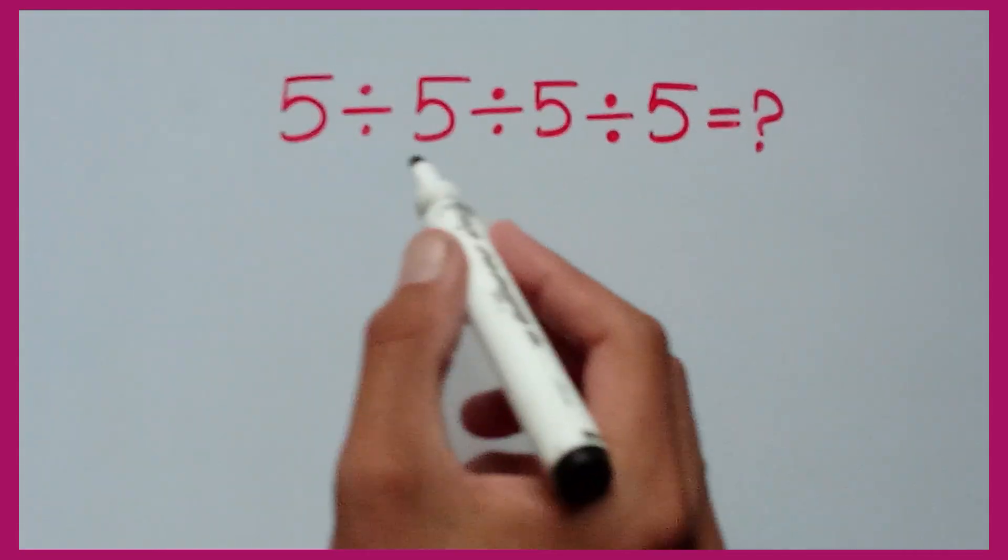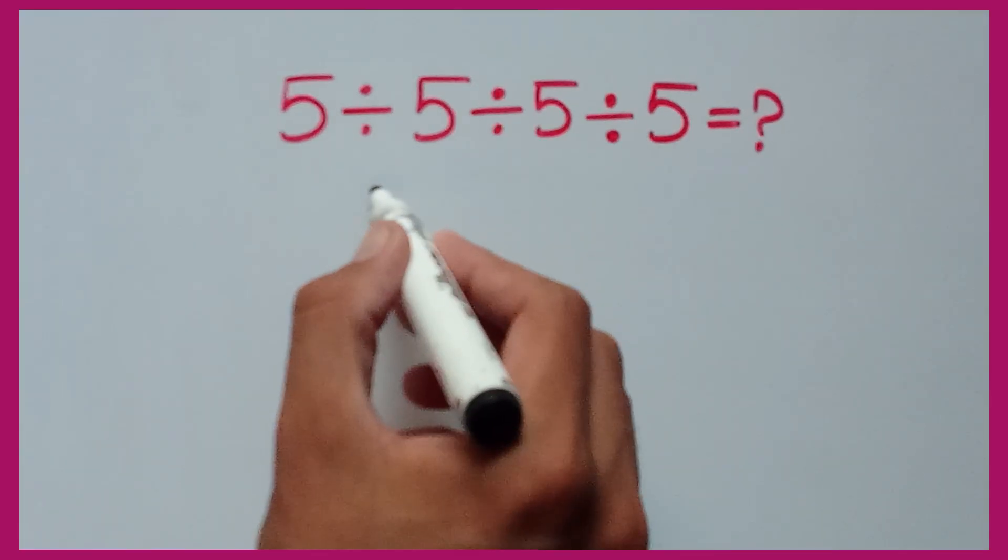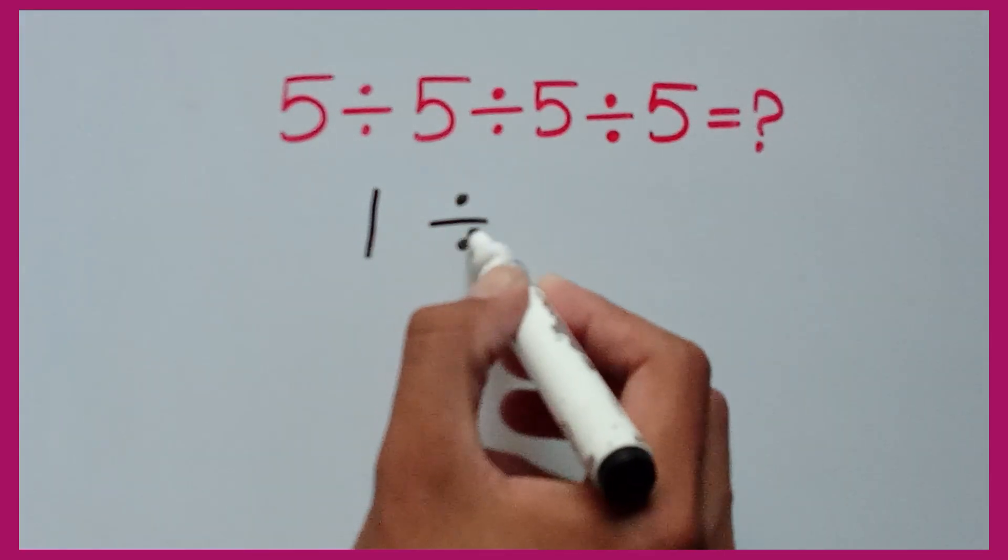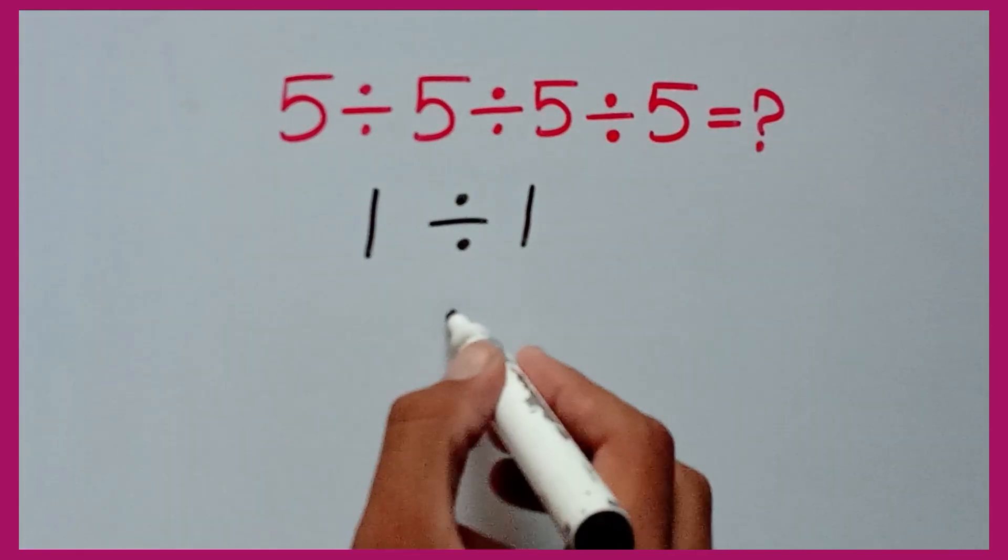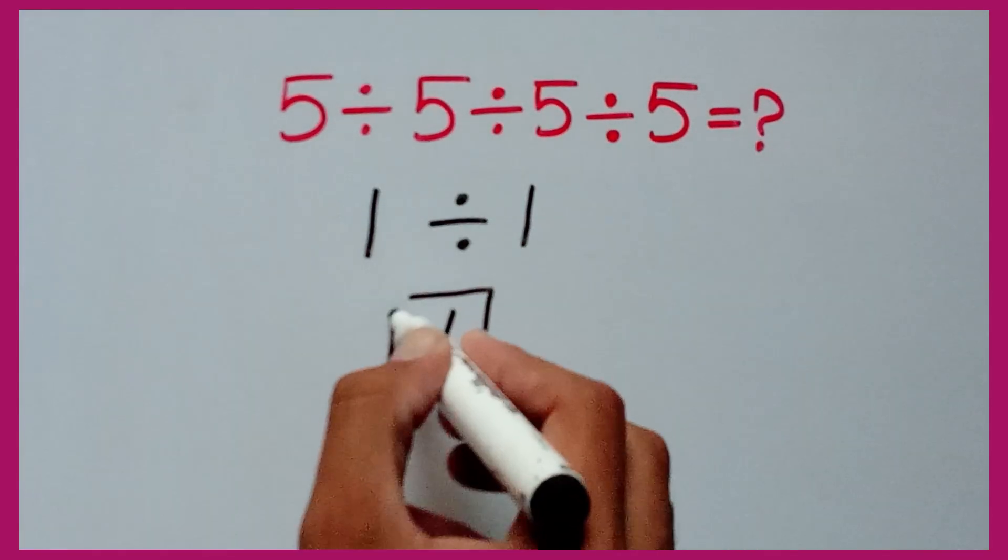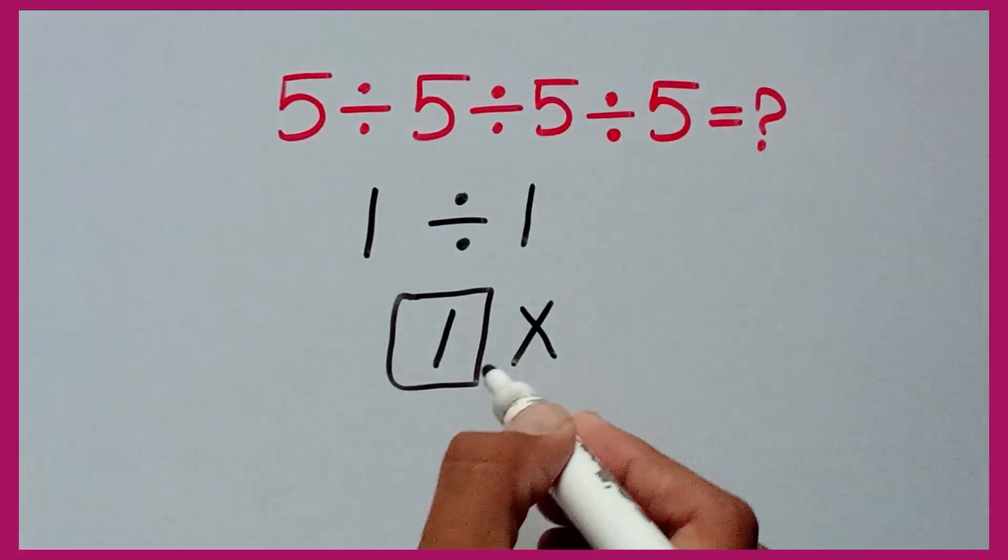They solve this as 5 divided by 5 equals 1, divided by 5 divided by 5 equals 1. Then 1 divided by 1 equals 1. But this answer is absolutely wrong.